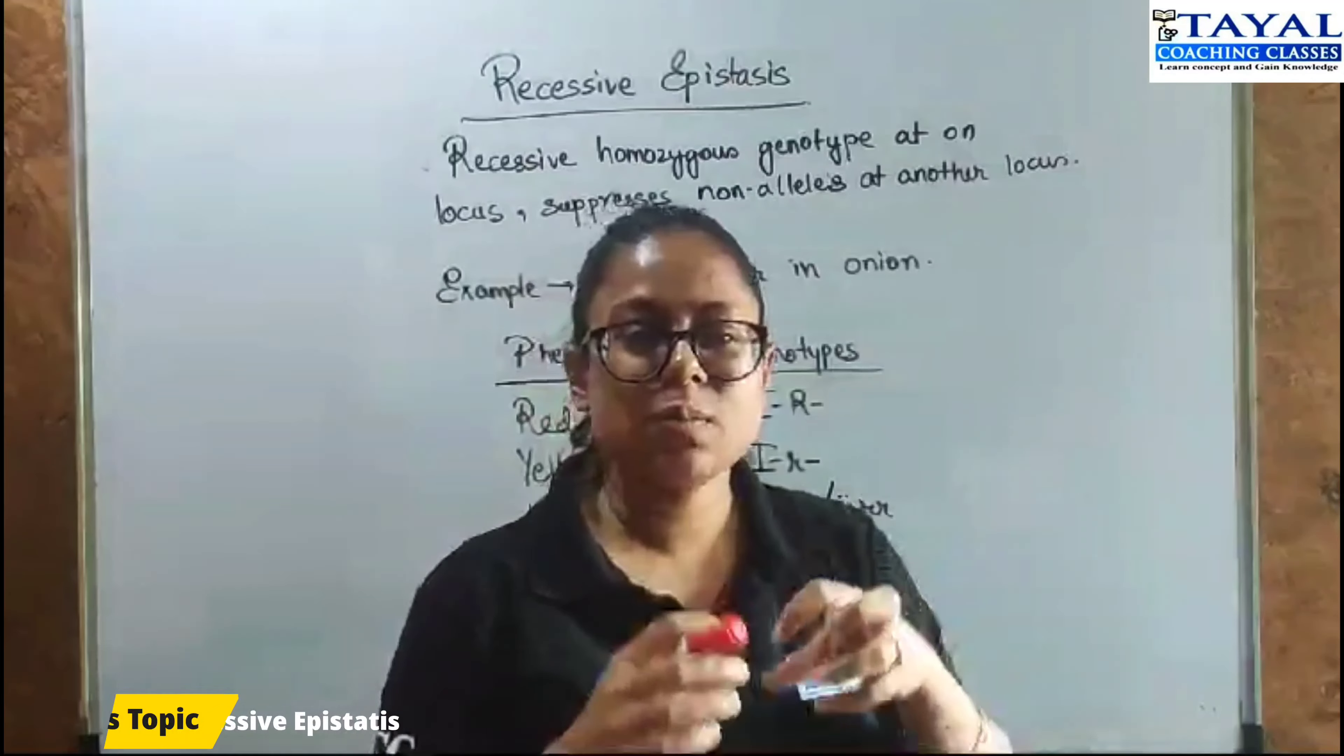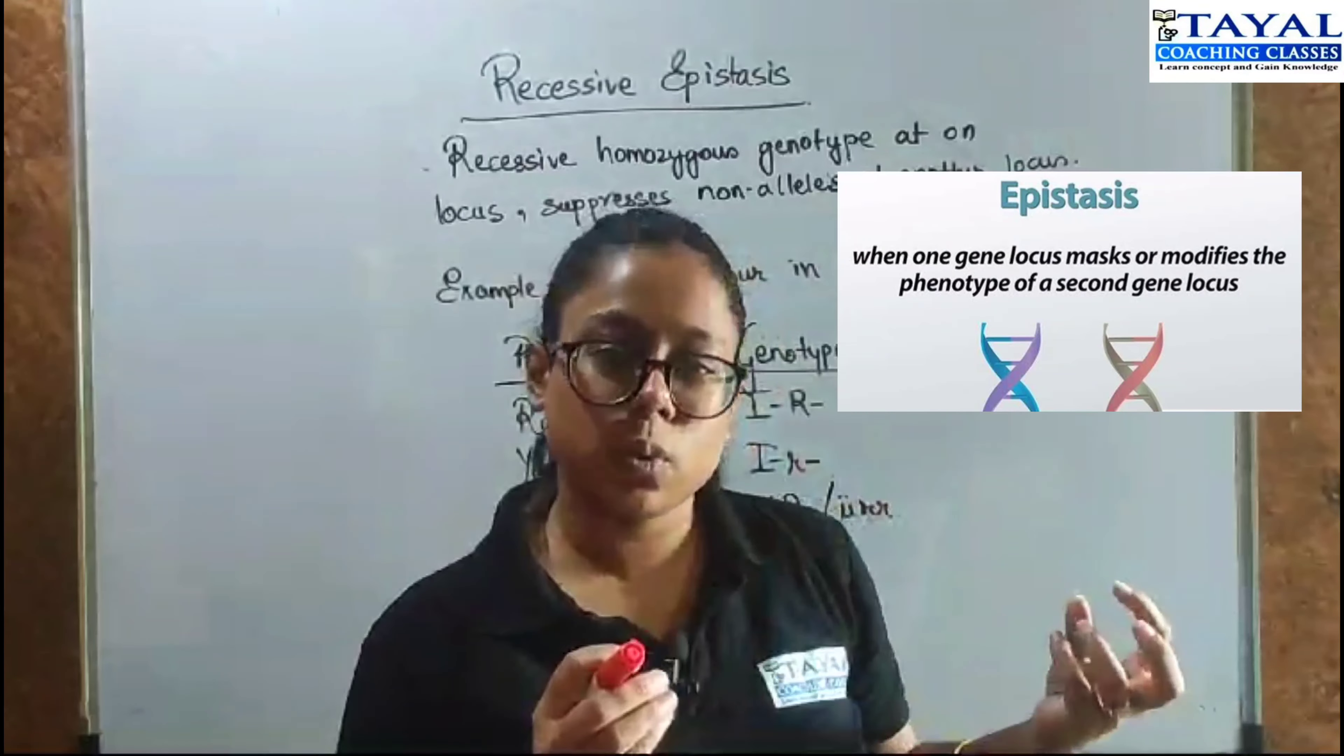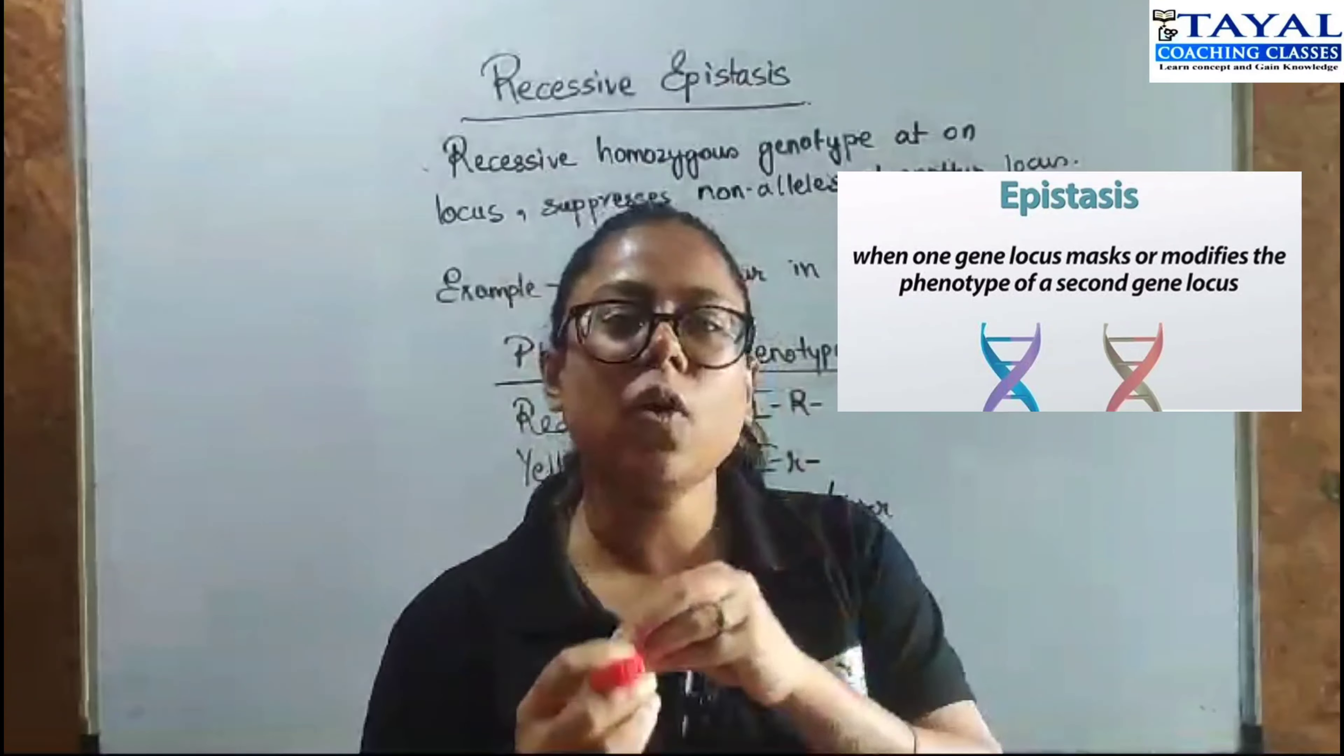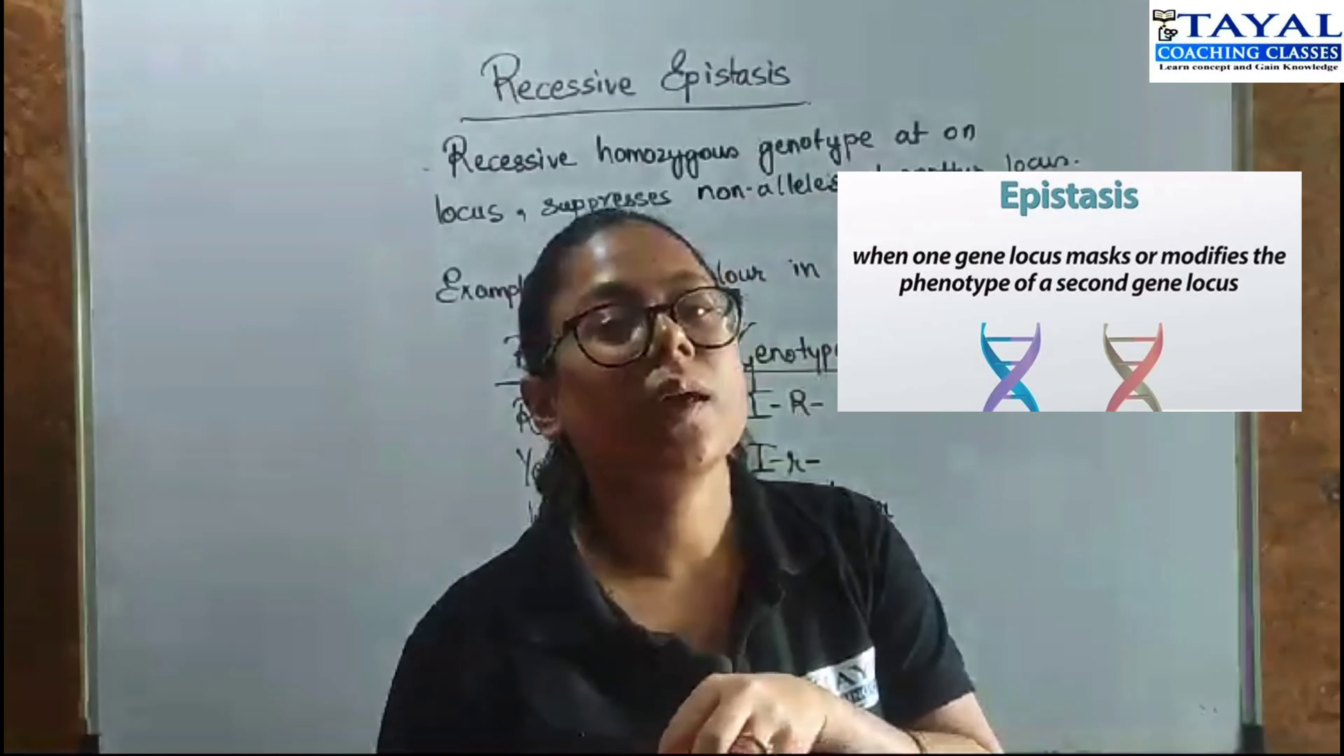So if you remember, epistasis means when a gene at a different locus will put an effect on the present gene, on the phenotypic gene, correct?